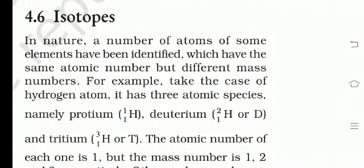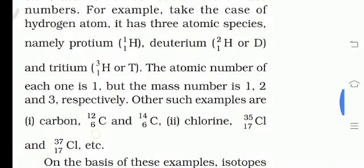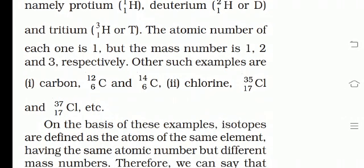Protium has atomic number 1 and mass number 1. Deuterium has atomic number 1 and mass number 2. And tritium has atomic number 1 and mass number 3. So the atomic number of each is 1, but the mass numbers are 1, 2, and 3 respectively. Other examples are carbon-12, carbon-14, chlorine-35, and chlorine-37.